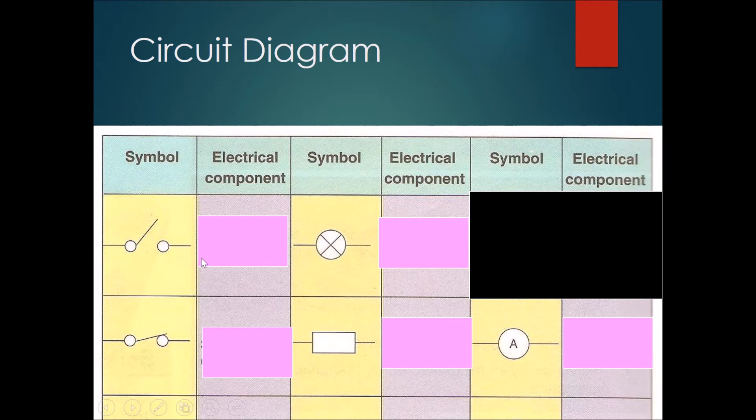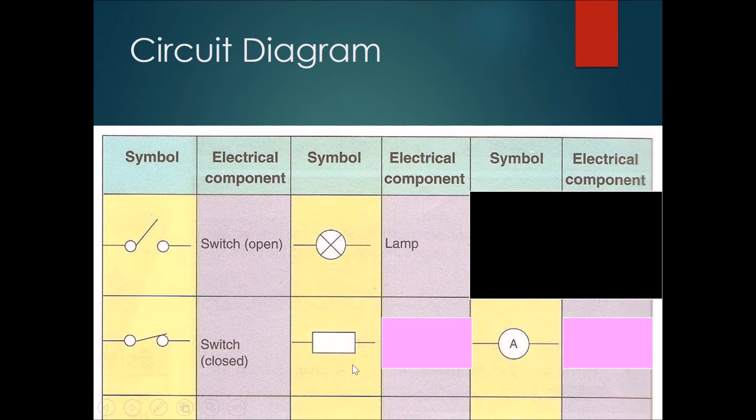So the first one is a switch. The next one over here will be a light bulb or a lamp. Over here will be a switch that is closed. This thing over here which is one square block will be a fixed resistor, a resistor that does not change its resistance.